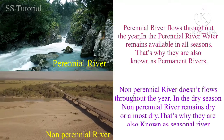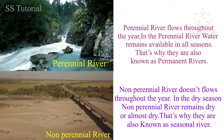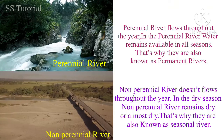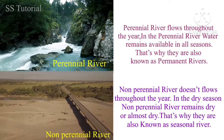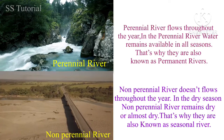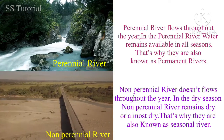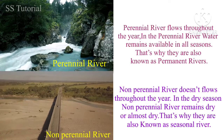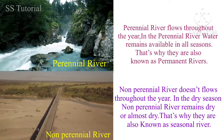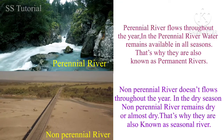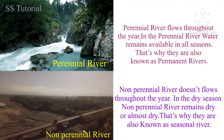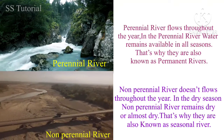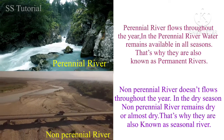Whereas rivers which do not flow throughout the year are called non-perennial rivers. That means water is not available throughout the year — in the dry season the river remains dry or almost dry. Non-perennial rivers are also known as seasonal rivers, as water remains available in a particular season only, that is the rainy season.